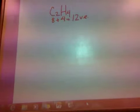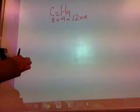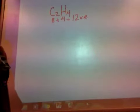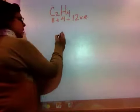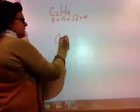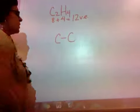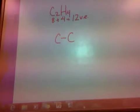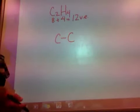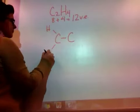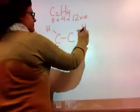So I have 12 valence electrons. The next thing I need to do is pick a central atom. Well, I have carbon and I have hydrogen. Hydrogen can never be a central atom, so that means I have to use carbon. So I'm going to have carbon — there are two carbons, so I have carbons attached to one another. And then those carbons are surrounded by four hydrogens, so each carbon has two hydrogens around it.